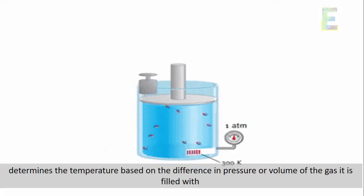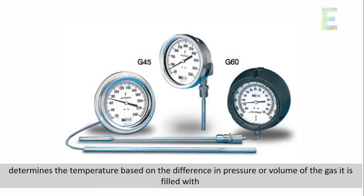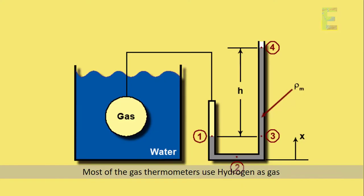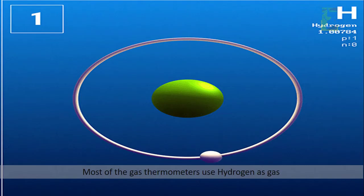Next is the gas thermometer. It determines the temperature based on the difference in pressure or volume of the gas it is filled with. Most of the gas thermometers use hydrogen as gas.